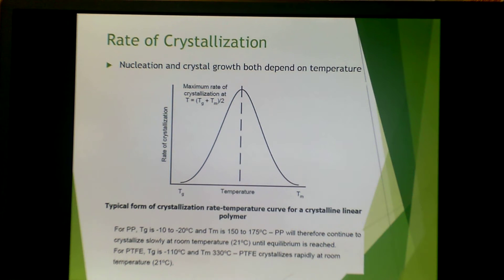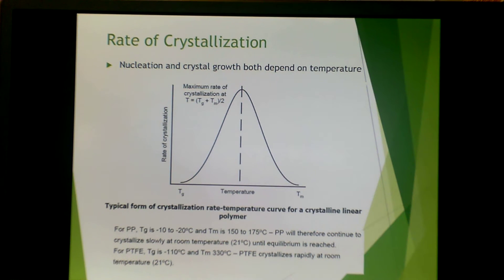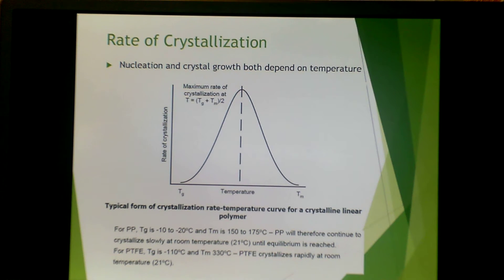Both the rate of nucleation and crystal growth depend on temperature. The rate of crystallization is highest at a point directly between the Tg and the Tm. For polypropylene, the Tg is −10 to −20°C and the Tm is 150 to 175°C, so it will slowly crystallize at room temperature unless you anneal it. For Teflon (PTFE), the Tg is −110°C and the Tm is 330°C, so PTFE rapidly crystallizes at room temperature. For a polypropylene part, you really need to do some form of annealing to reach equilibrium before the part is placed in use.